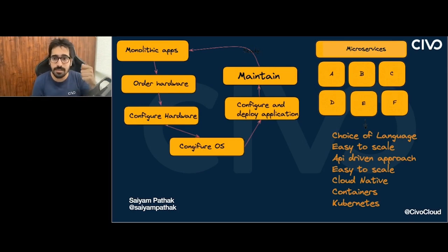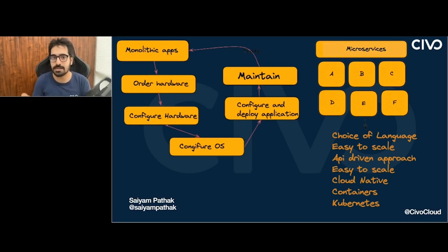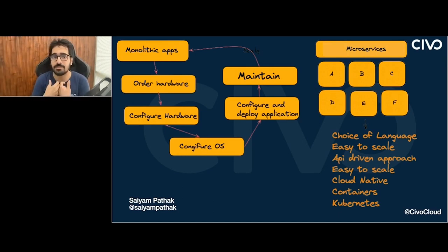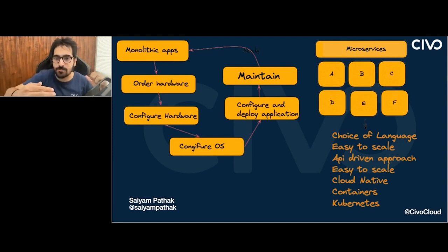If you have to scale the application, you have to order more hardware. Most of these problems started to be solved by the world of APIs and cloud-native, the API-driven stuff. You can now order an instance at a button-click or a CLI. You get a Ubuntu instance, CentOS instance, or even a Kubernetes cluster within a few minutes. But again, if one piece of code depends on an older library version and you want a new version, you cannot do that in monolithic apps.